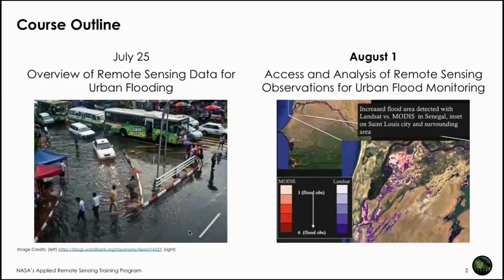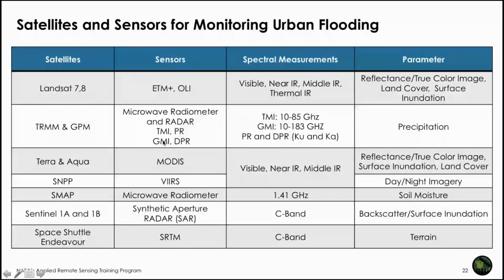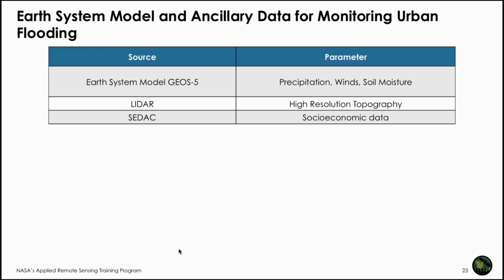We talked about a number of satellites and sensors relevant for monitoring urban flooding — parameters for precipitation, terrain, slope, and whether you can see surface inundation using optical or microwave data. We also talked about our system model such as the Goddard Earth Observing System, which provides near real-time as well as hourly forecasts of precipitation, winds, and soil moisture. We also talked about CDAC, where to get socio-economic data, and mentioned LiDAR high-resolution topography data that we are going to cover today.